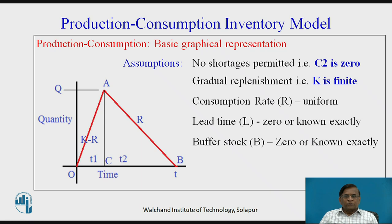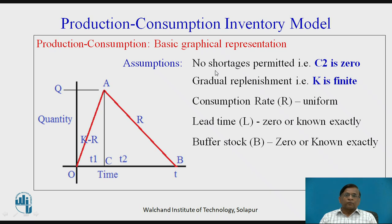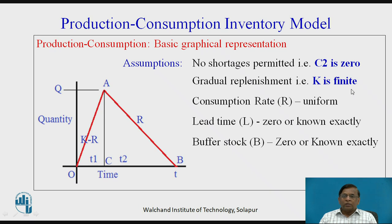Now let us briefly discuss the assumptions. Any inventory control model comes with a set of assumptions. For this particular model, two basic assumptions are highlighted. First, shortages are not permitted — no shortages — that is, mathematically, C2 equals 0. Second, production rate K is assumed to be finite, or in other words, it is also referred to as gradual replenishment of inventory items. Because of this assumption, we get the line O to A; otherwise we would get a straight vertical line.